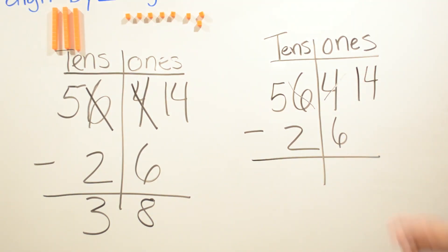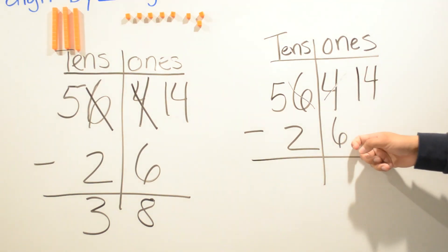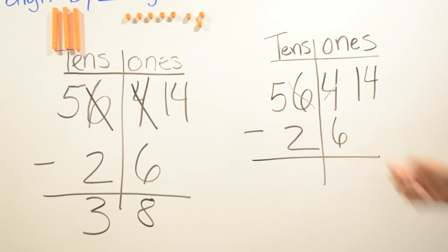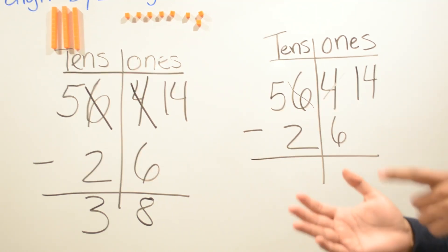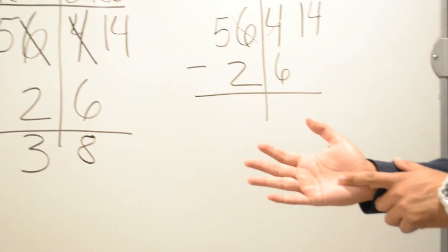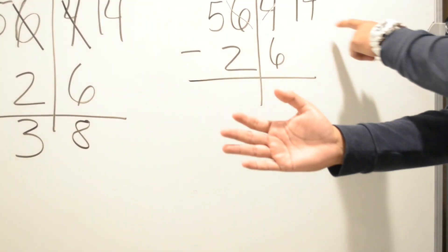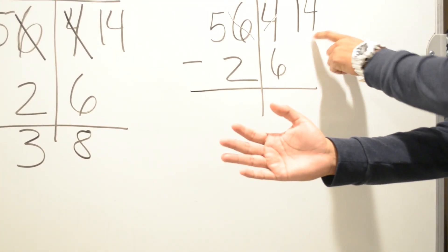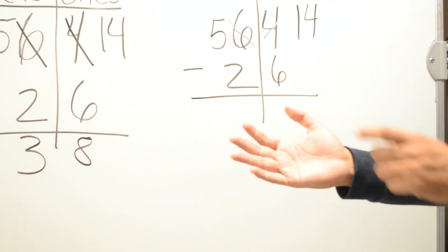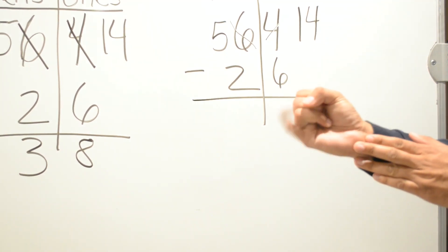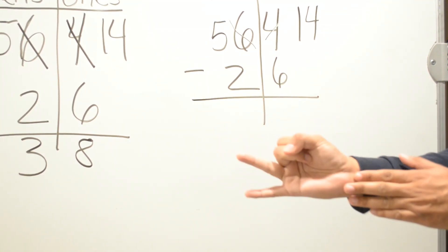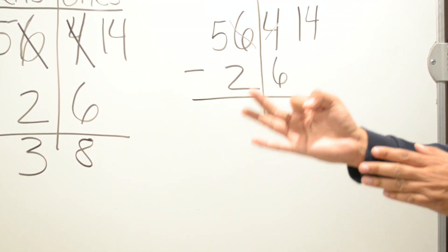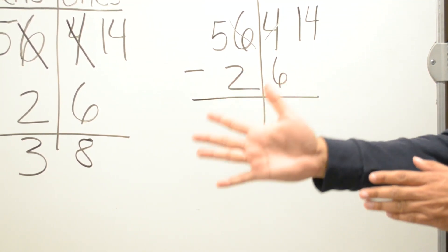Then we use our helping hands. We're gonna keep six in our head — we start from six — and we're gonna stop at 14. So we say: six, seven, eight, nine, ten, eleven...